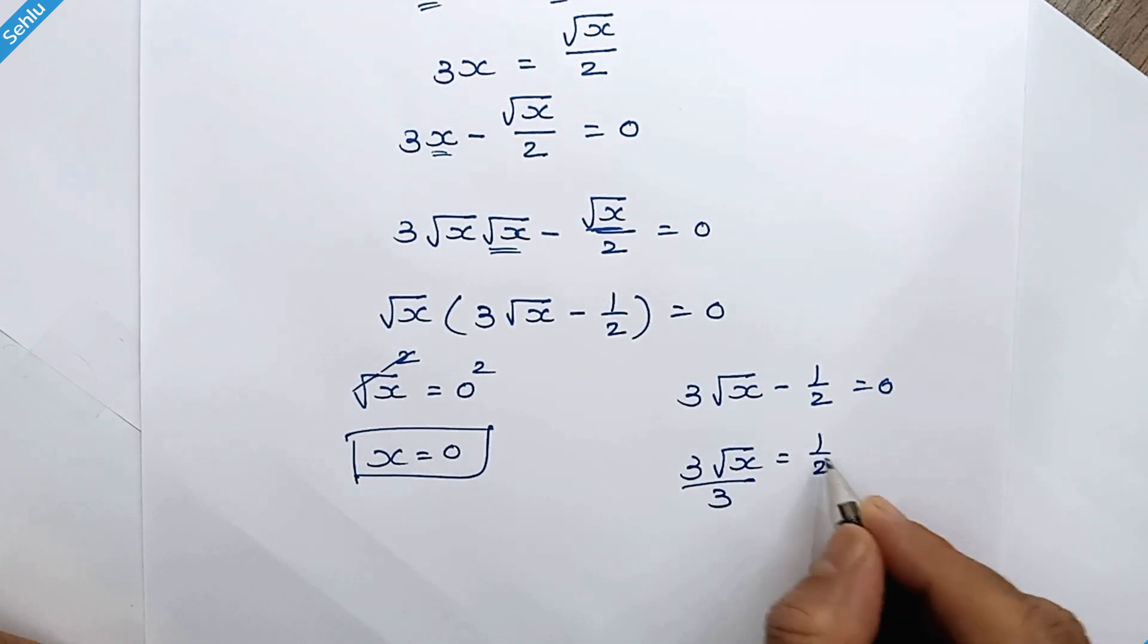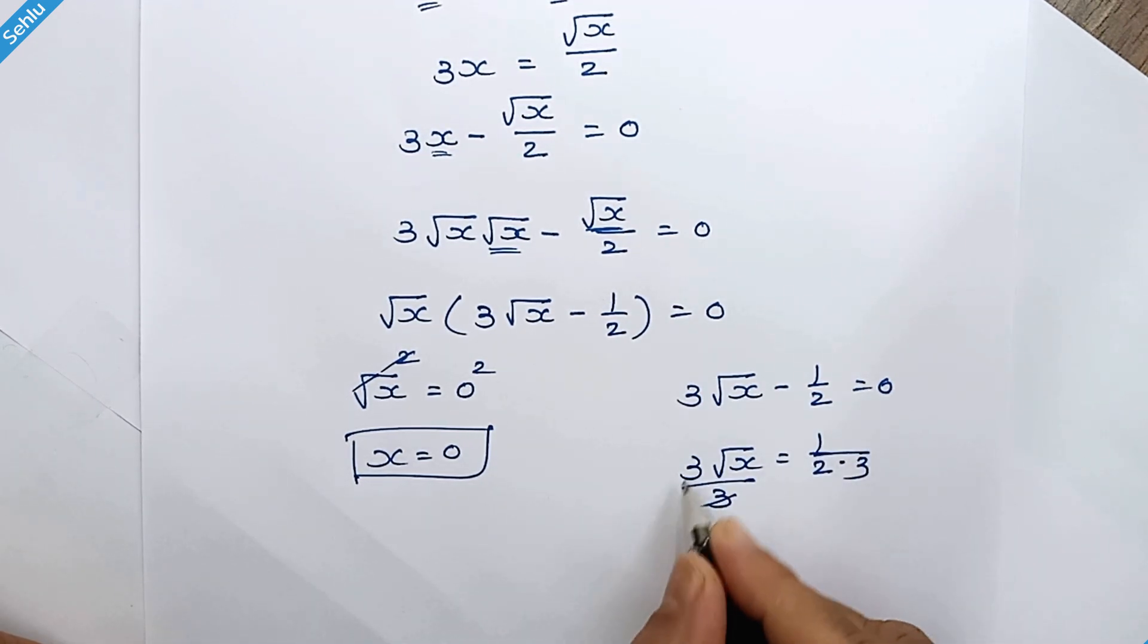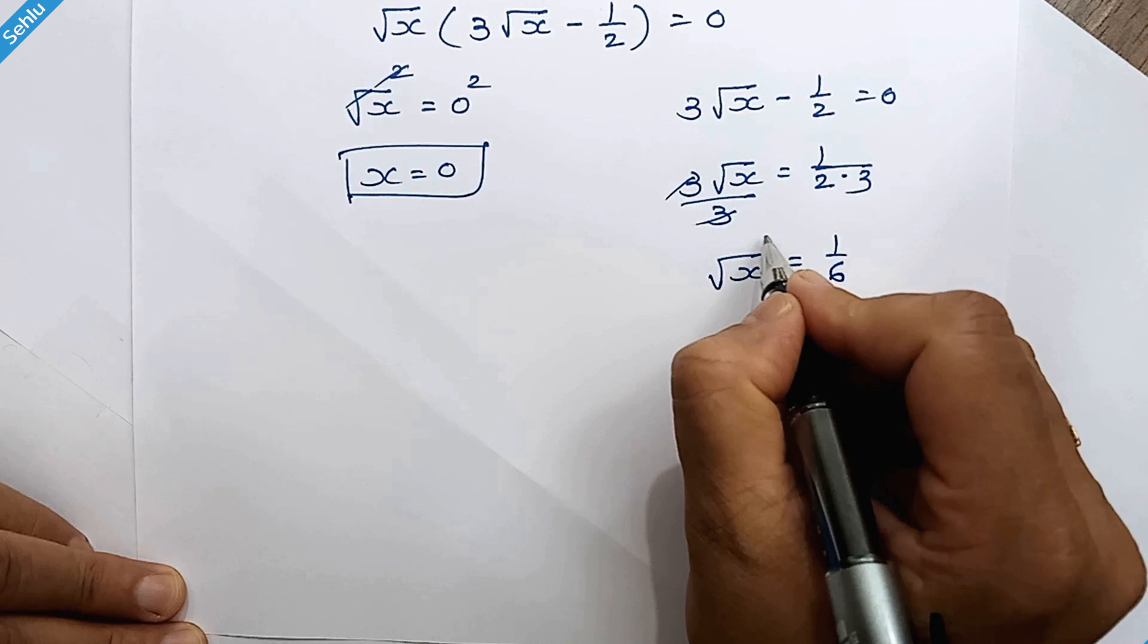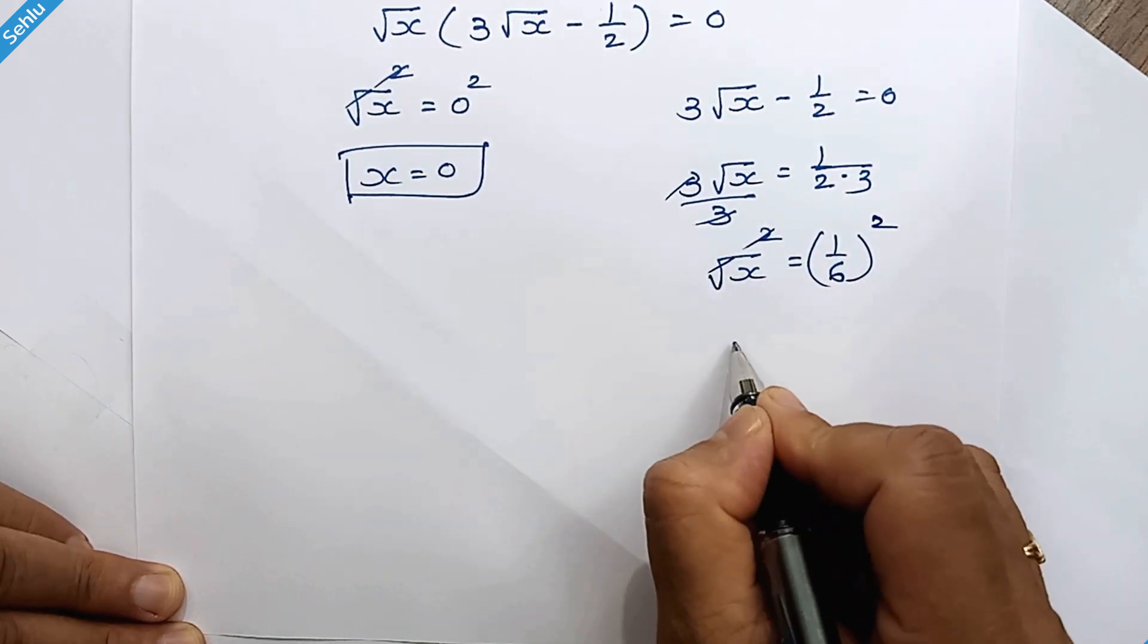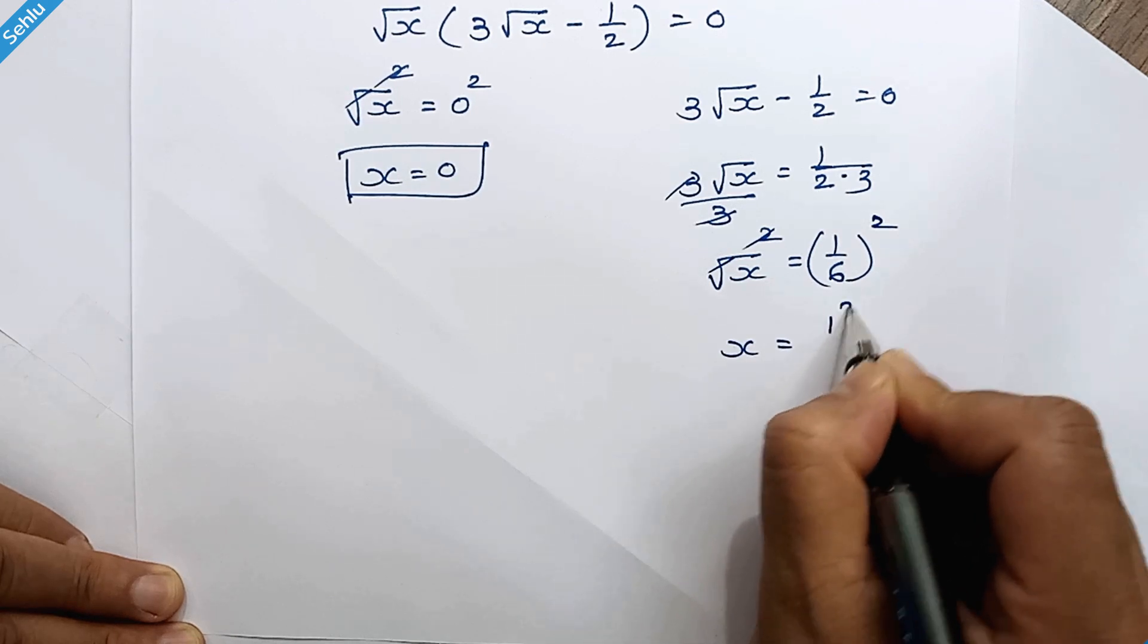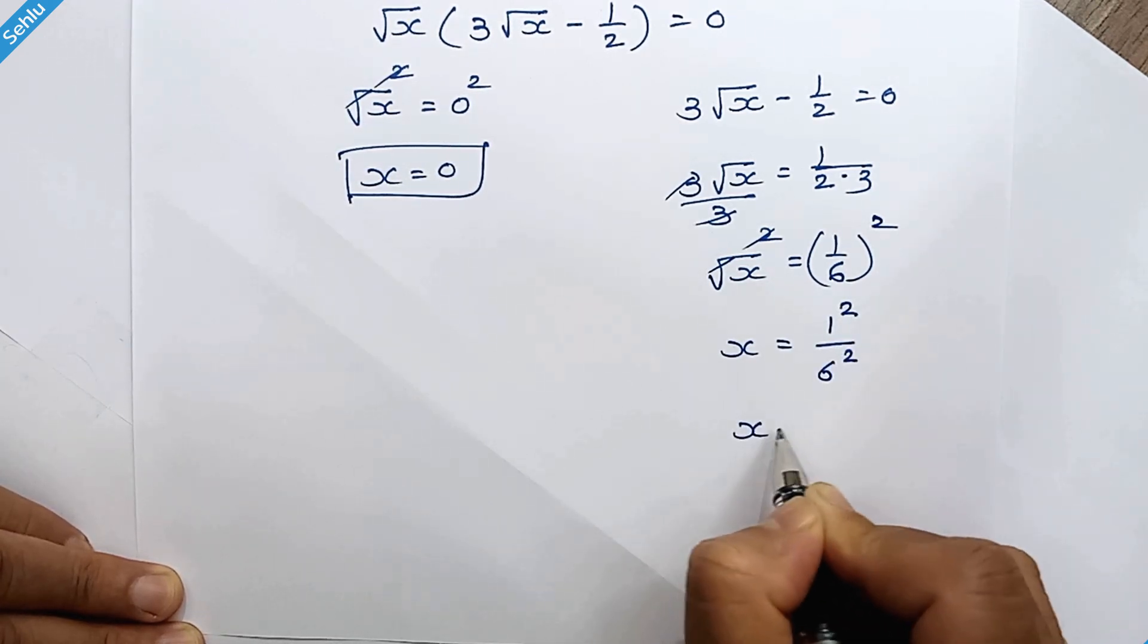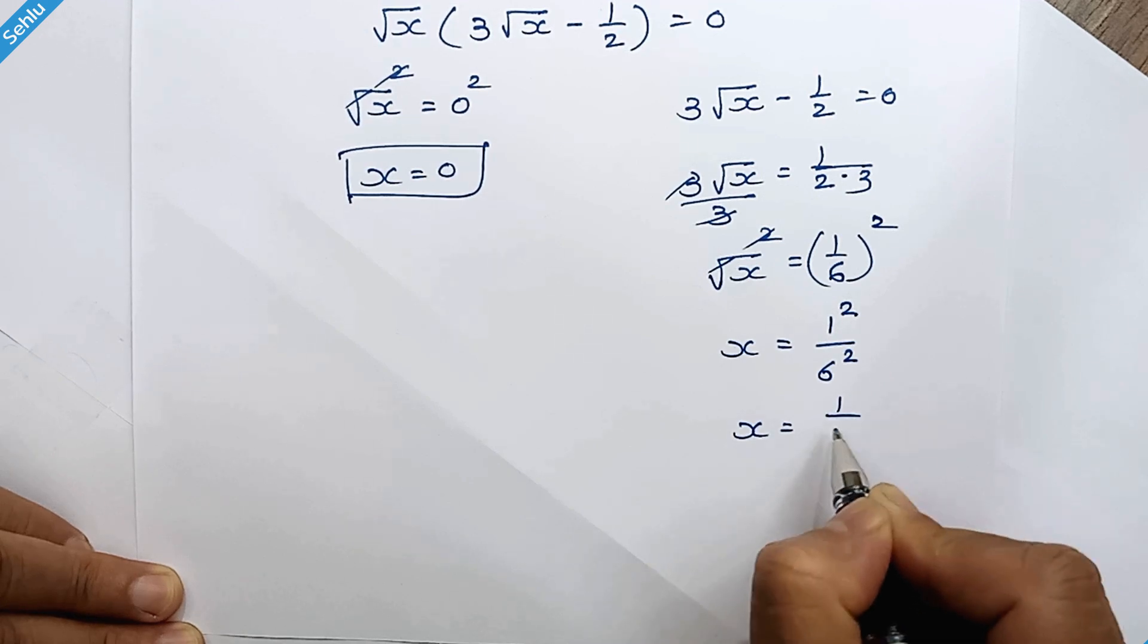If we divide with 3 both the sides square root of x is equal to 1 over 6. And we will square both sides so x is equal to 1 square over 6 square. 1 square remains 1 and 6 square is 36.